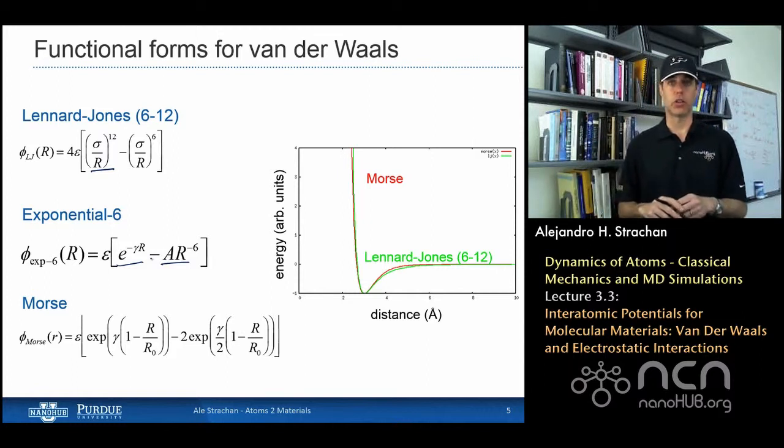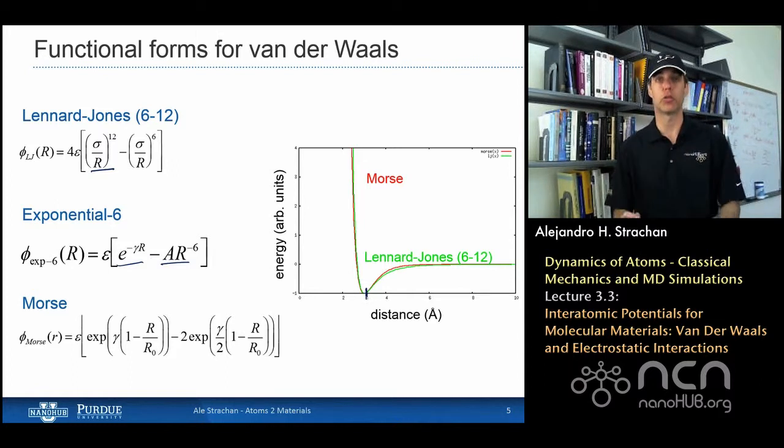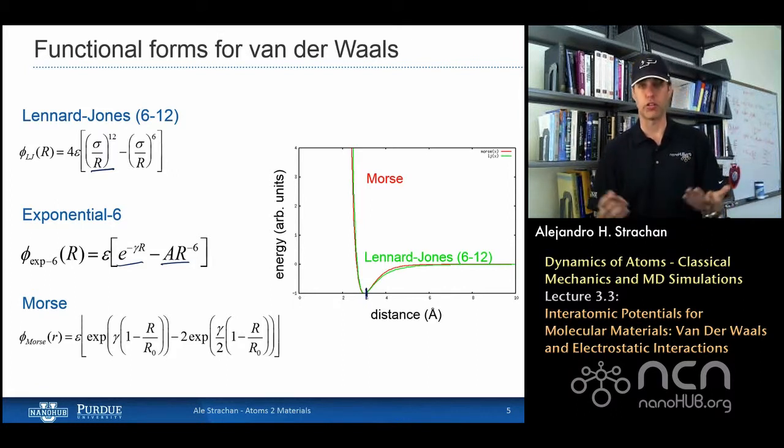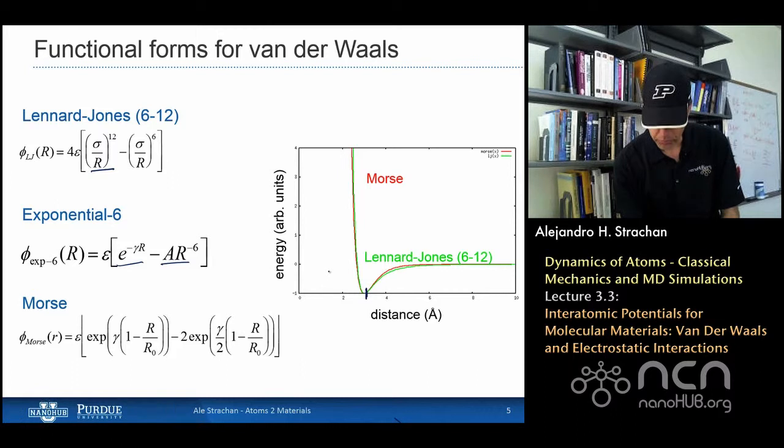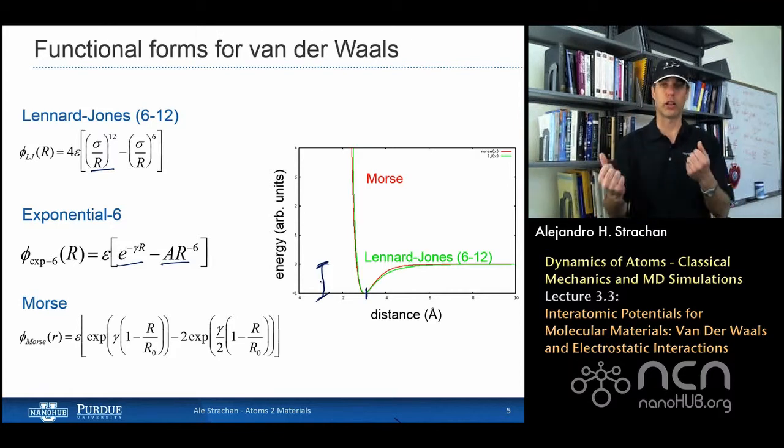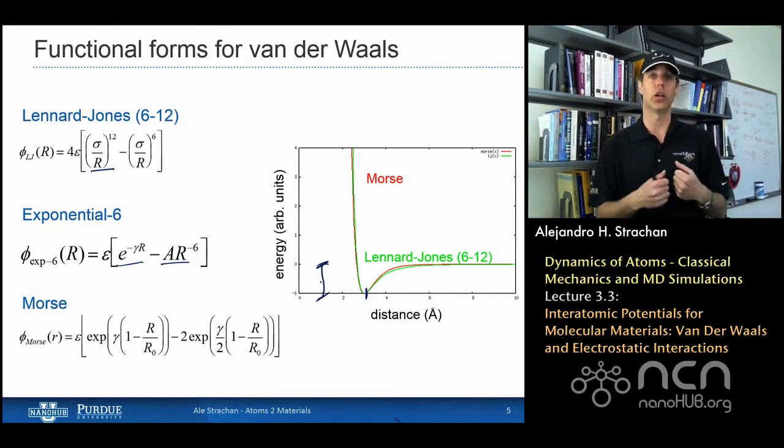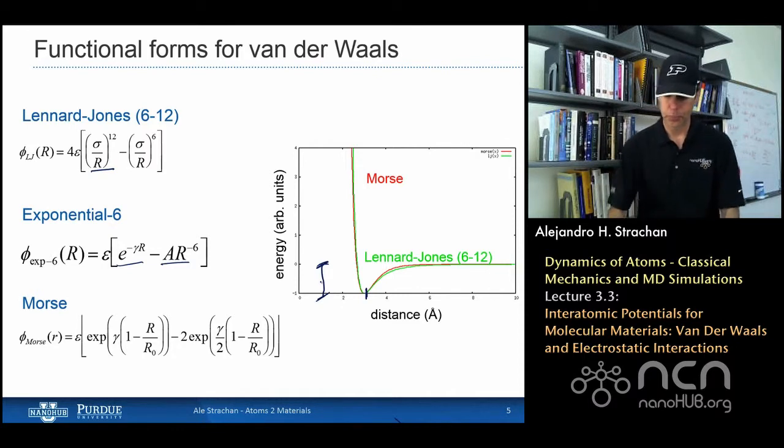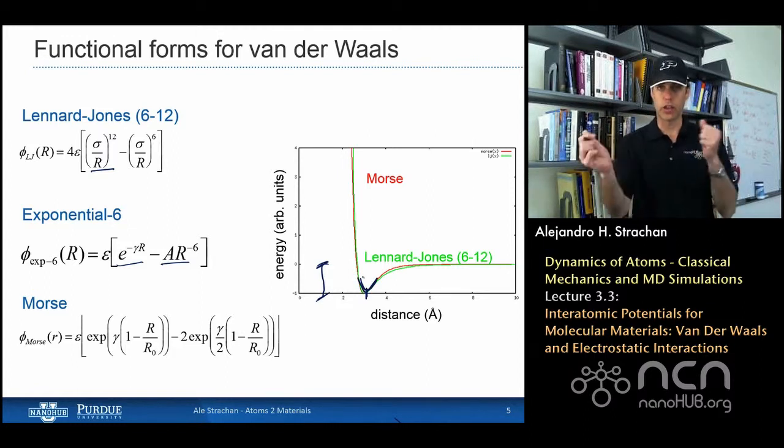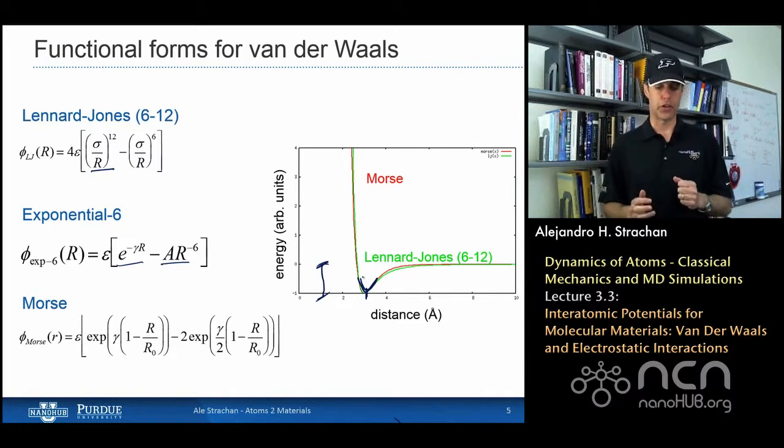There are three parameters that you care about in these terms. You have a van der Waals bond distance, which of course is much longer than a real bond. You can see in this example it's about three angstroms. The potential well depth is how strong this interaction is, and of course these van der Waals interactions are much weaker than covalent interactions. And the third thing that we care about is the curvature, and that has to do with vibrational frequencies.